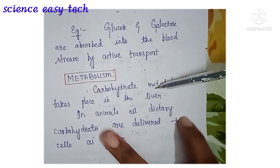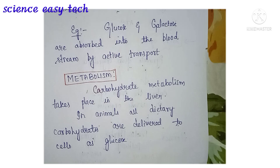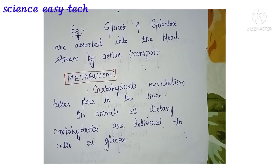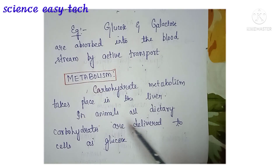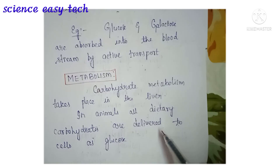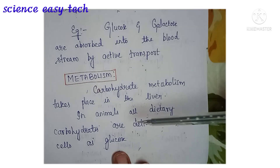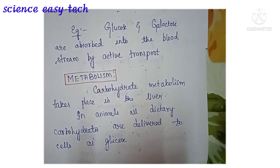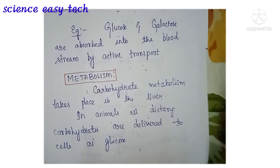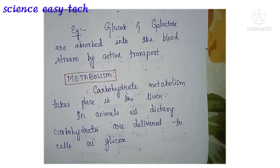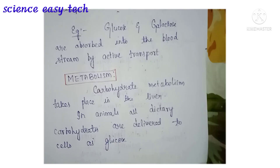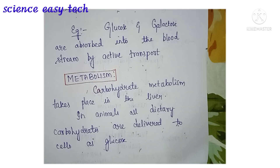Next is metabolism. Carbohydrate metabolism mostly takes place in the vital organ — the liver. In animals, all the dietary carbohydrates are delivered to the cells as glucose. All the carbohydrates are converted into glucose and moved into the cells for energy. Each cell needs glucose as well as oxygen for its survival.